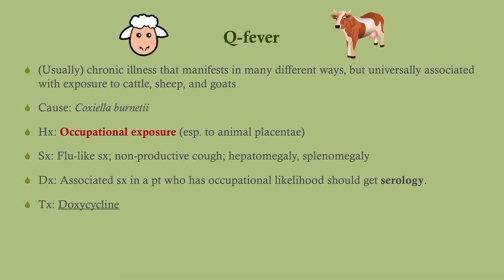Q fever is a chronic illness that manifests in a variety of different ways. What's going to come up on your exam is they'll tell you you're dealing with a veterinarian or a farmer who's around animals all the time, particularly when the animals are giving birth, because this tends to be carried in the placenta. Look for a history of occupational exposure — either veterinarian or farmer. The symptoms are nonspecific: flu-like symptoms, hepatomegaly, splenomegaly. If you've got a patient with nonspecific symptoms and maybe some disturbed liver functions or hepatomegaly, you should get serology for Coxiella.